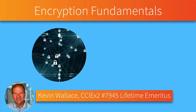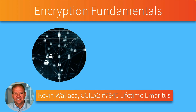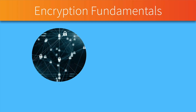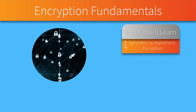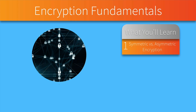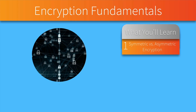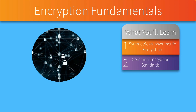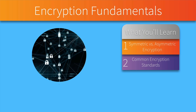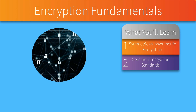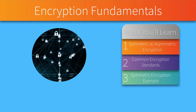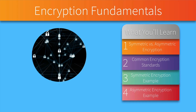My name is Kevin Wallace, and we're going to be looking at a couple of different types of encryption in this video — symmetric and asymmetric encryption approaches. We'll see what the difference is, what the advantages are of one versus the other, and we'll take a look at some common encryption standards like DES, Triple DES, RSA, and AES. Then we'll walk through an example of using symmetric encryption, followed by an asymmetric encryption example.